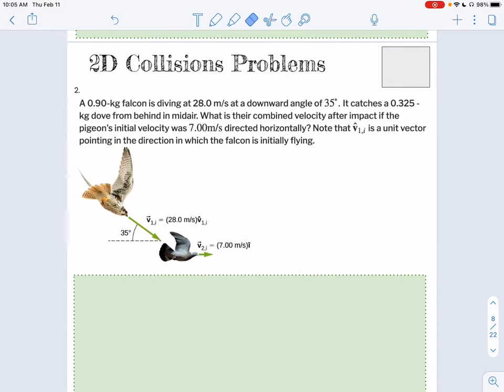Okay, so here's the 2D problem. A 0.90 kilogram falcon is diving at 28 meters per second at a downward angle of 35 degrees. It catches a 3.25 kilogram dove from behind in midair. What is their combined velocity after the impact if the dove's initial velocity was 7 meters per second directed horizontally?